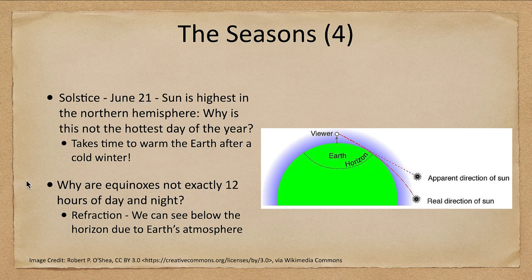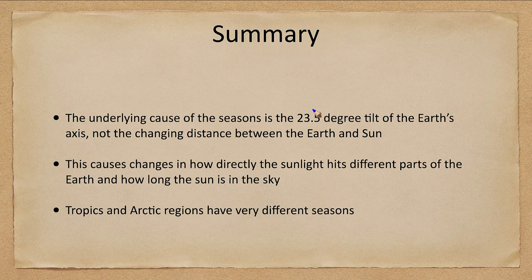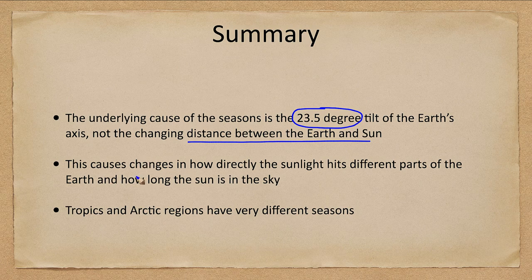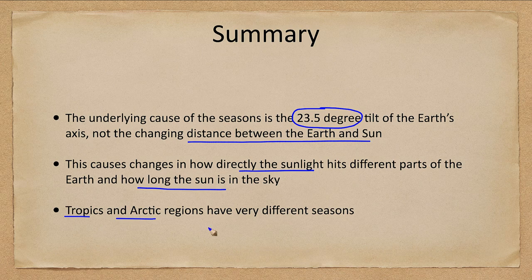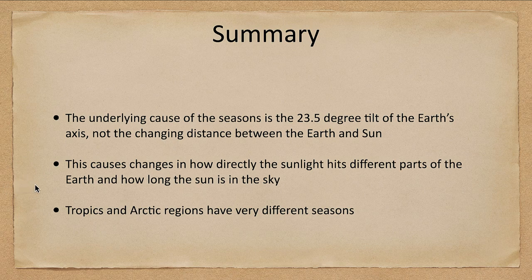So let's finish up with our summary. The underlying cause of the seasons is the 23 and a half degree tilt of Earth's axis — it has nothing to do with the changing distance between Earth and Sun. This causes changes in how directly the sunlight hits different parts of the Earth, and how long the Sun is in the sky. The tropics and the Arctic regions have very different seasons: the Arctic sees extremes in length of daylight but very low Sun altitude at all times, while the tropical regions have very little variation in daylight length but the Sun is always very high in the sky. The seasons vary most in the middle latitudes. So that concludes this lecture on the seasons — we'll be back again next time for another topic in astronomy.